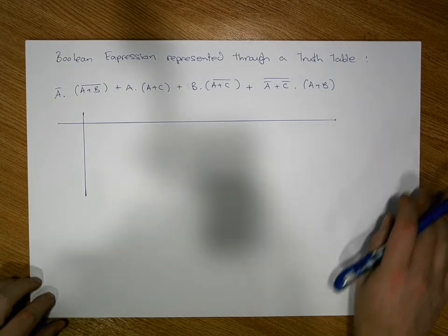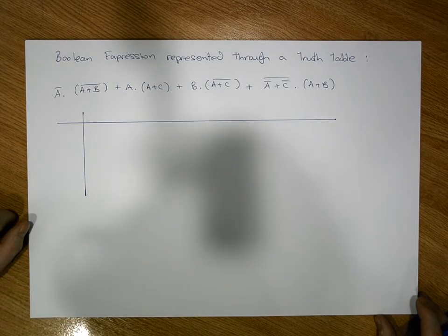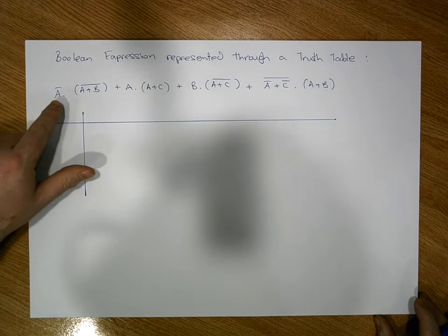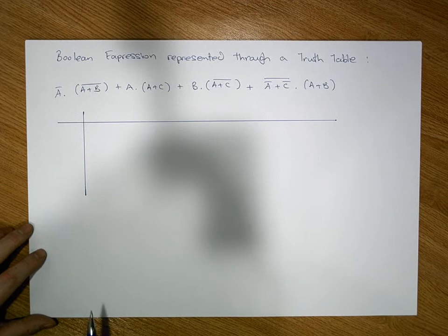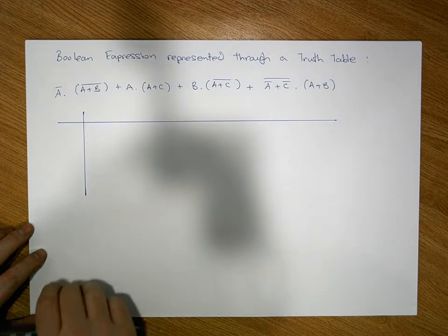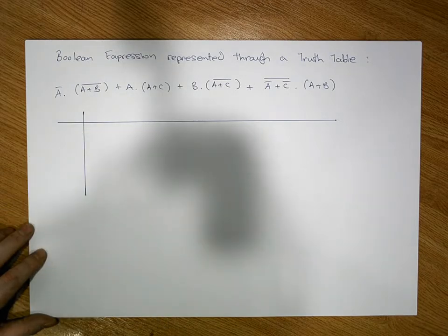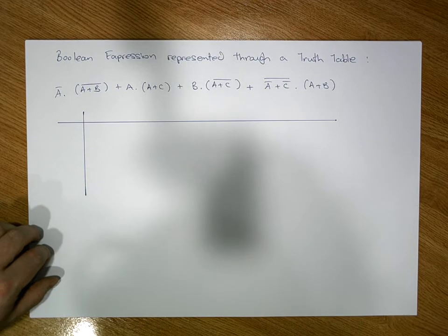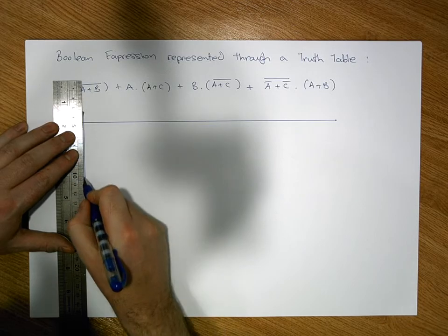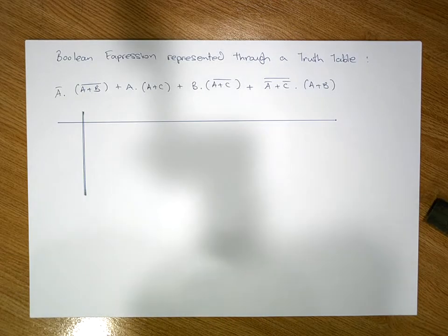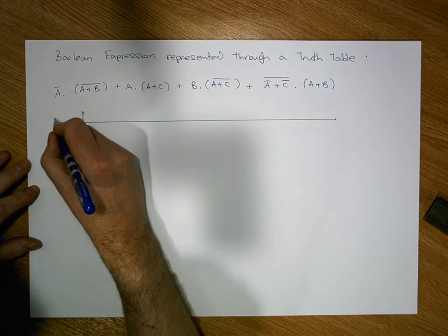The first thing we should observe is the inputs to this system and how many unique letters we have. We have A, B, and C, so this is a three-input system. Our truth table has two parts: a left-hand part where we list the inputs and the possible states they could be in at any moment in time, and a right-hand part — marked with a double bar to differentiate it — where we evaluate the Boolean expression stage by stage.